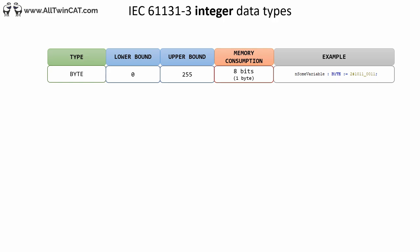Next we have some more integer-type data types. BYTE can store values between 0 and 255 and just like SINT only consumes one byte of memory. A neat feature in PLC programming is that you can define the base of an integer by writing the base number, a hash symbol, and then the value in that base format. For example, base 2 — binary — followed by 10110011 represents 179 in base 10. If you don't explicitly declare the base, it implicitly defaults to base 10.